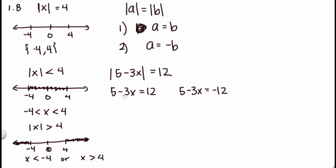And then from here you just solve. So you subtract 5 from both sides, so I get -3x equals 7. I have to subtract 5 here and I have to subtract 5 here. Then I divide by negative 3, so I get x equals negative 7 thirds on this one.